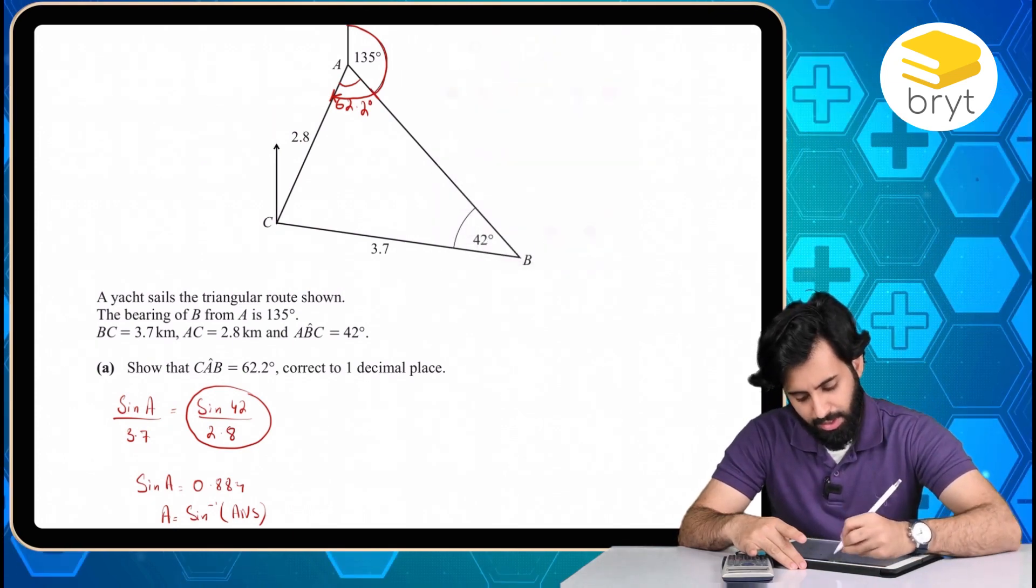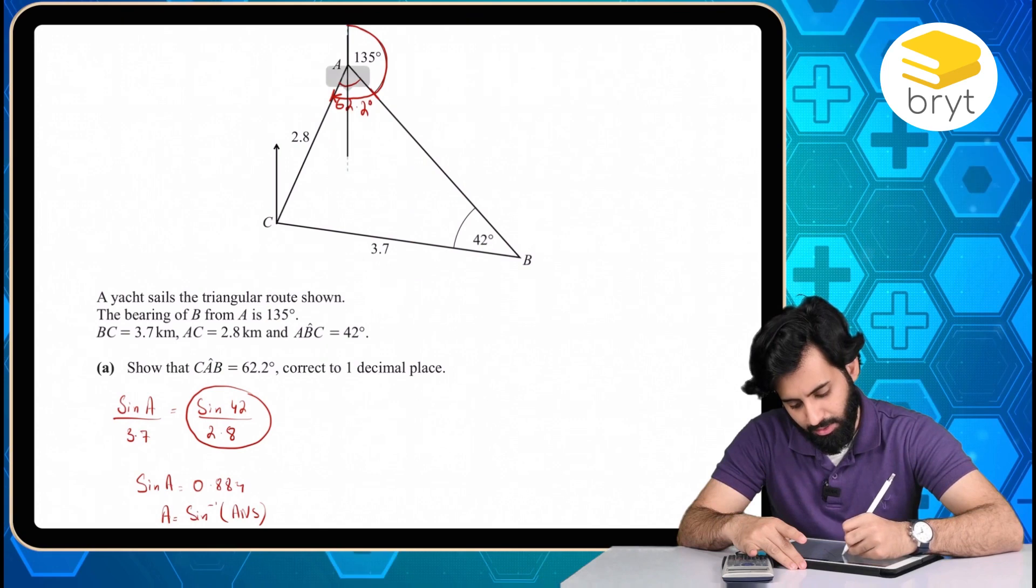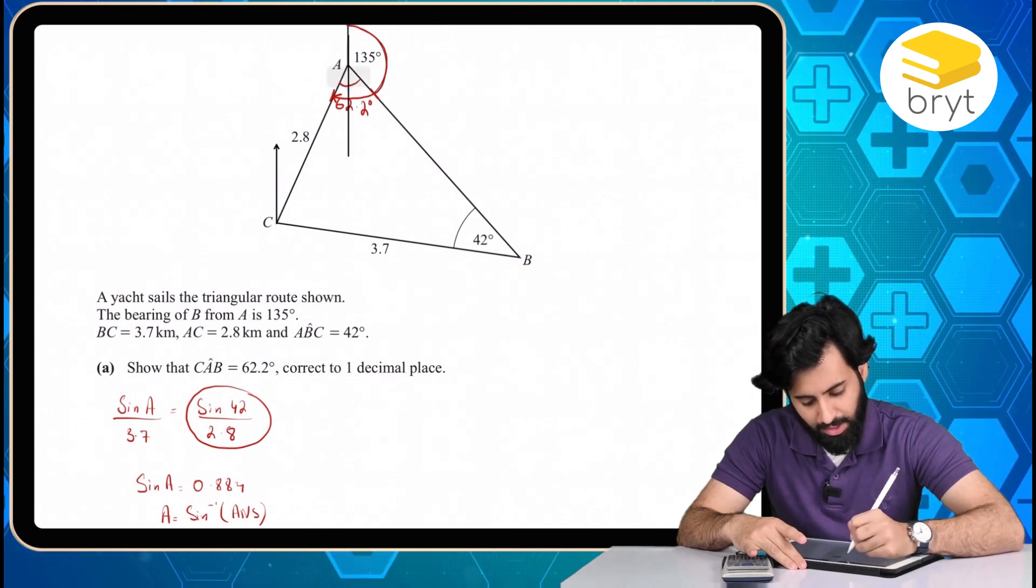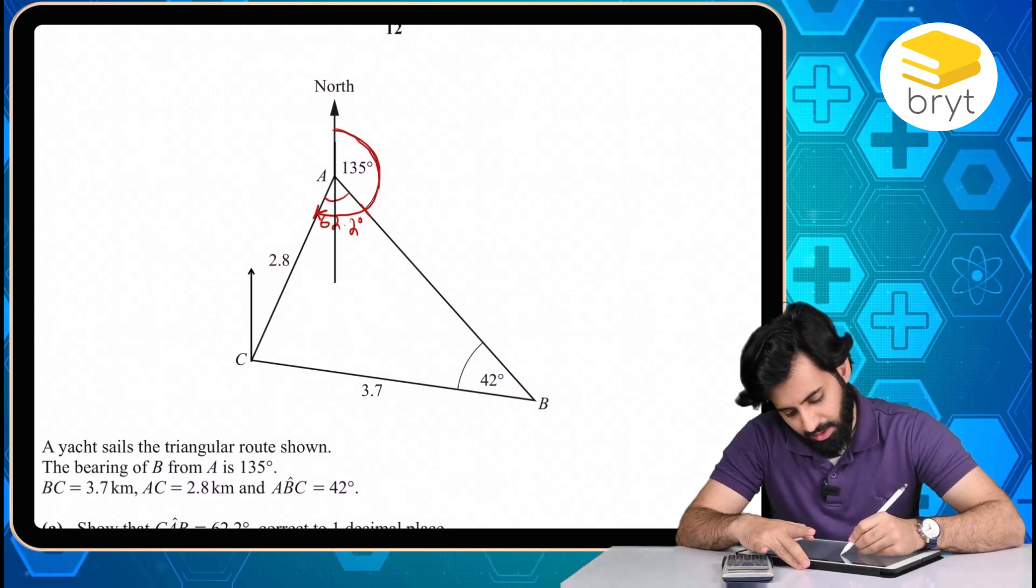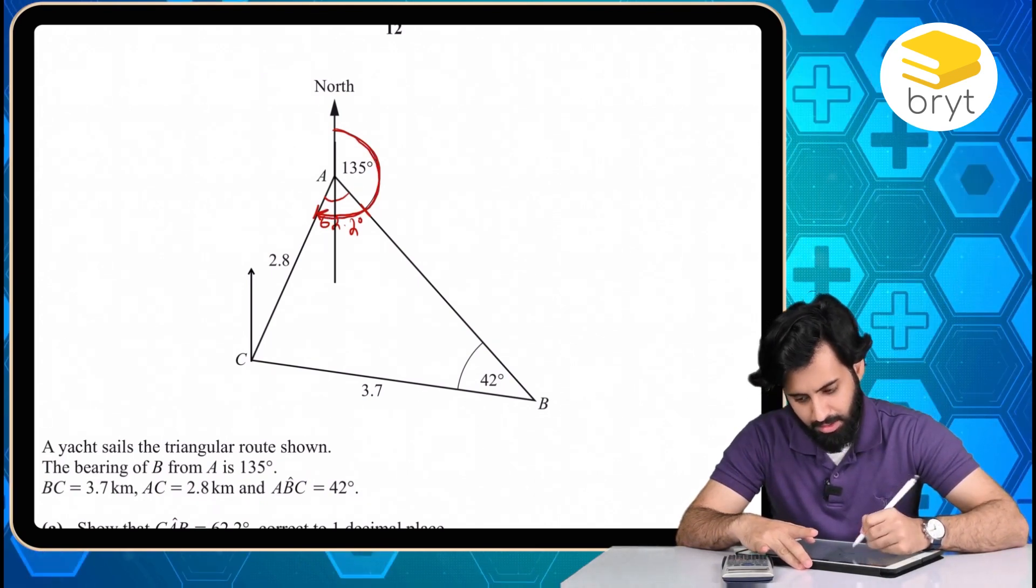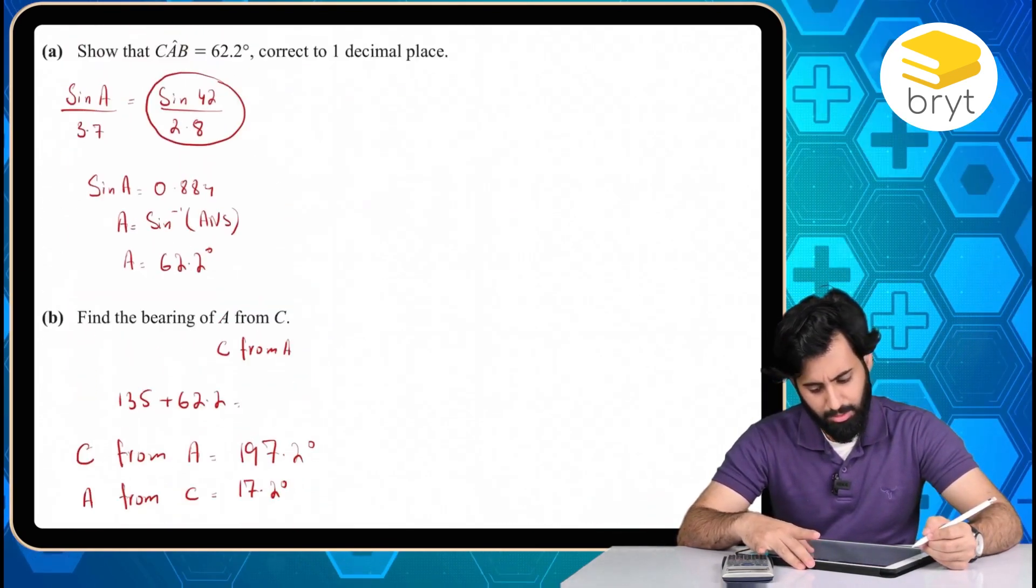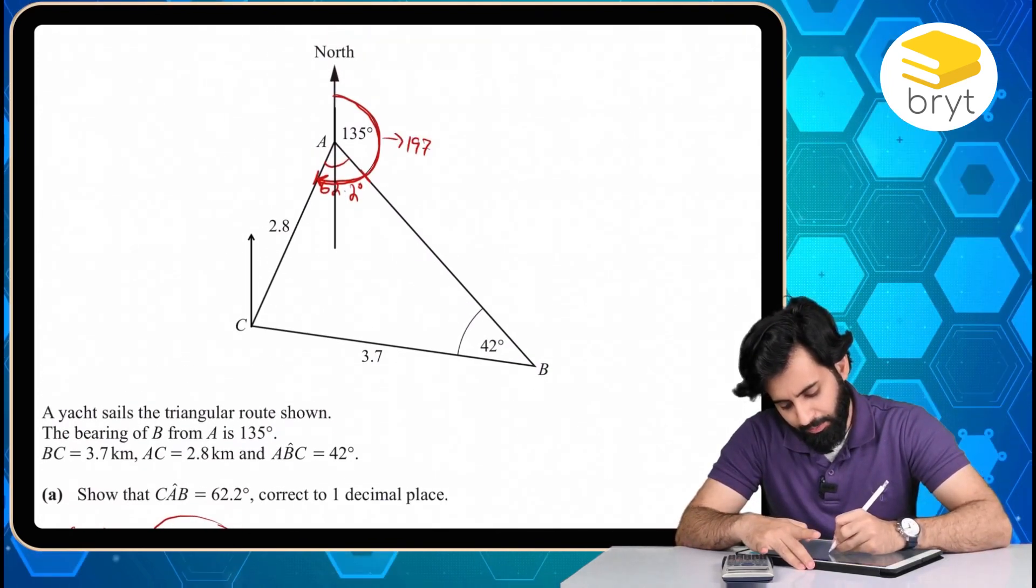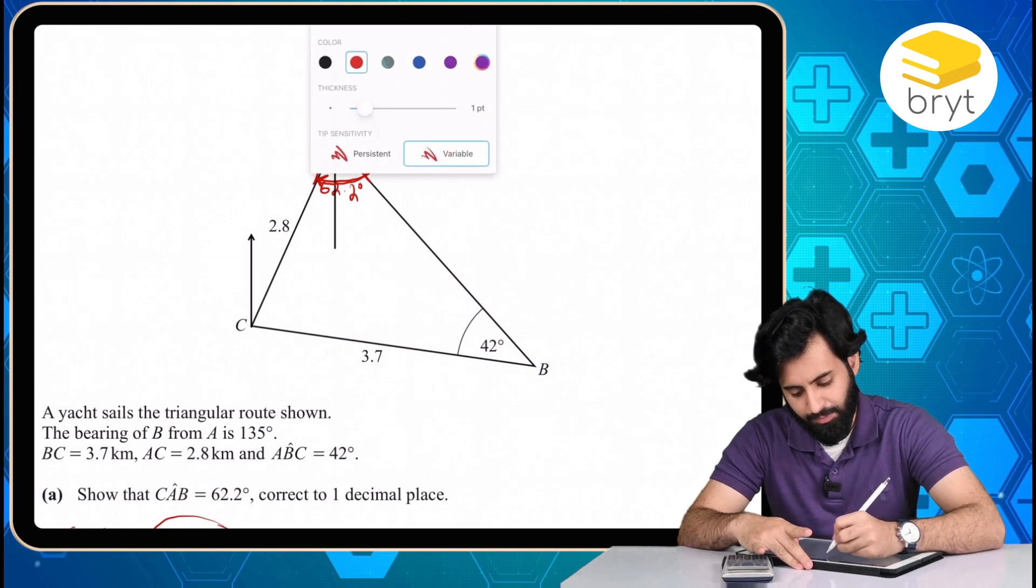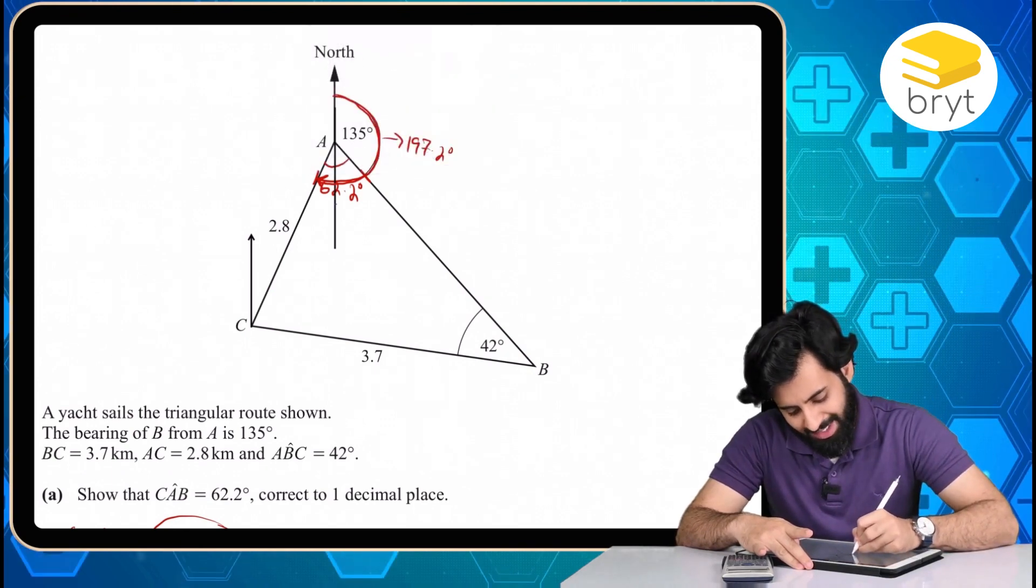And what happens if you extend the north that we already have at A? So in that case, you get a pair of parallel lines. And so we know that this entire angle is equal to 197.2. And from 197.2, you would subtract 180 to get this angle.